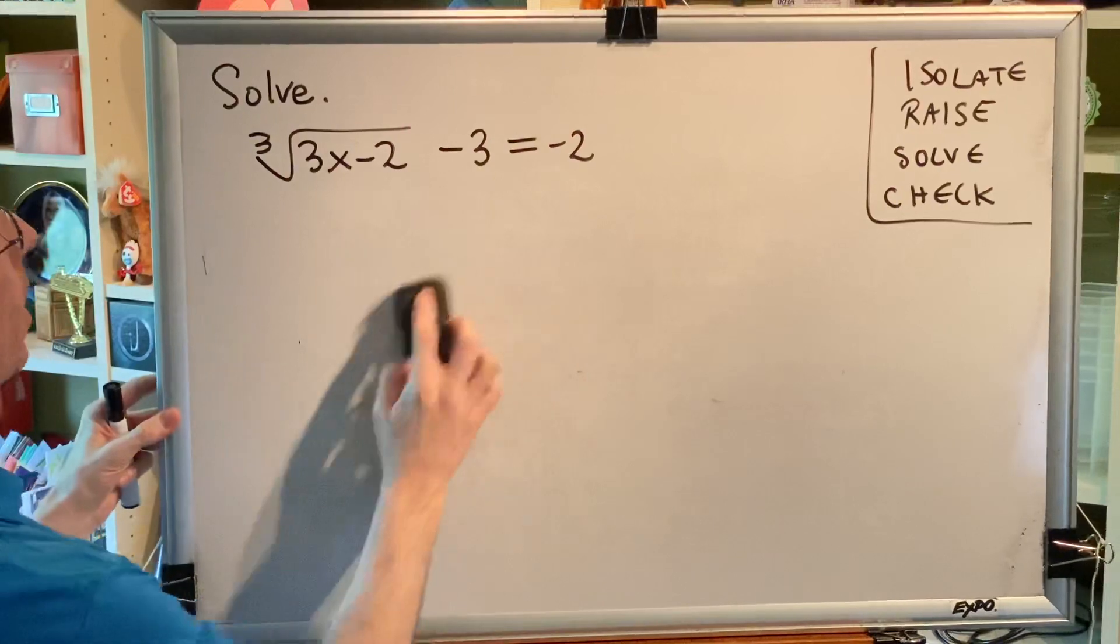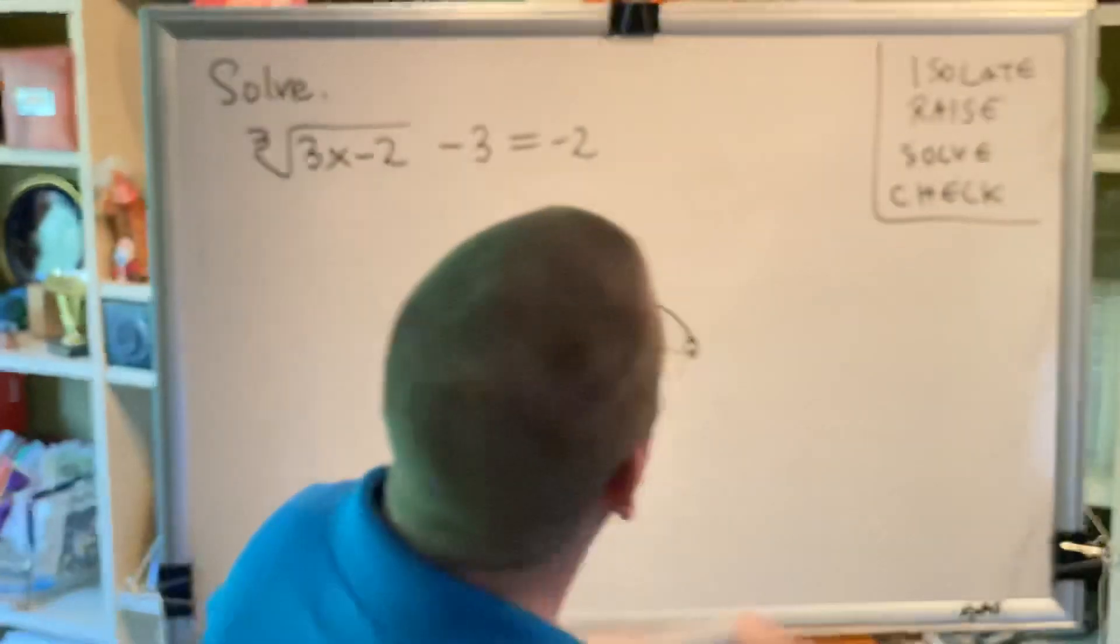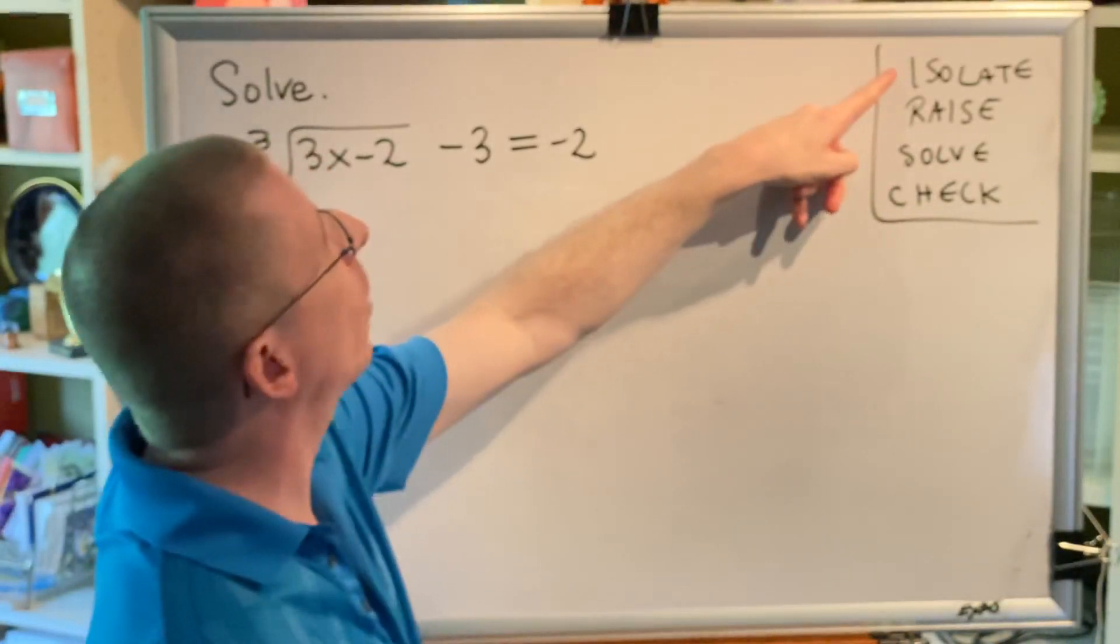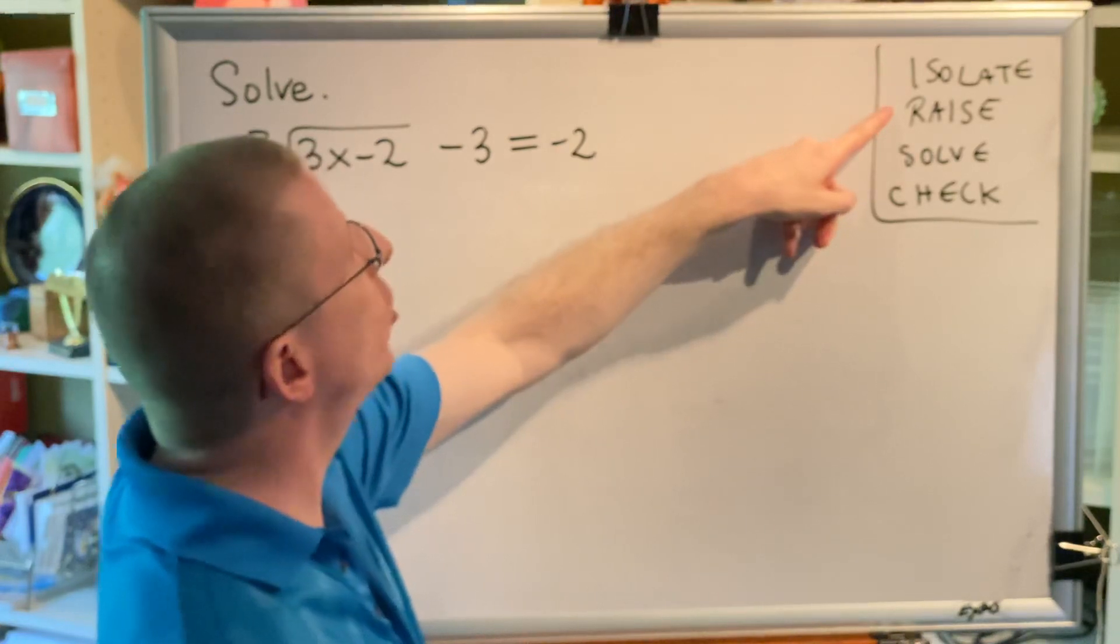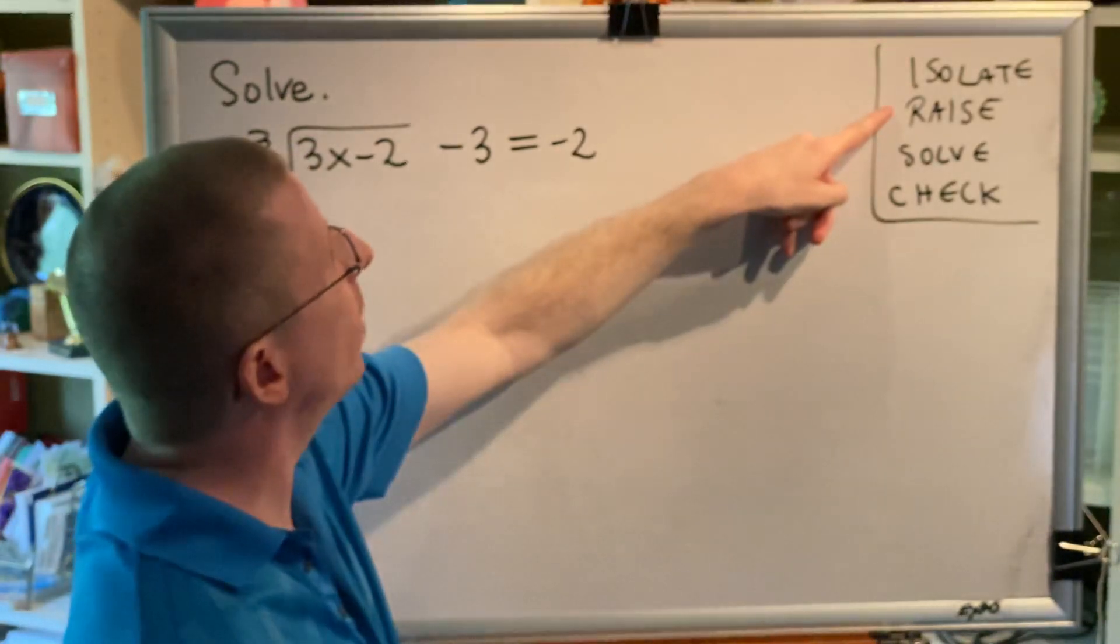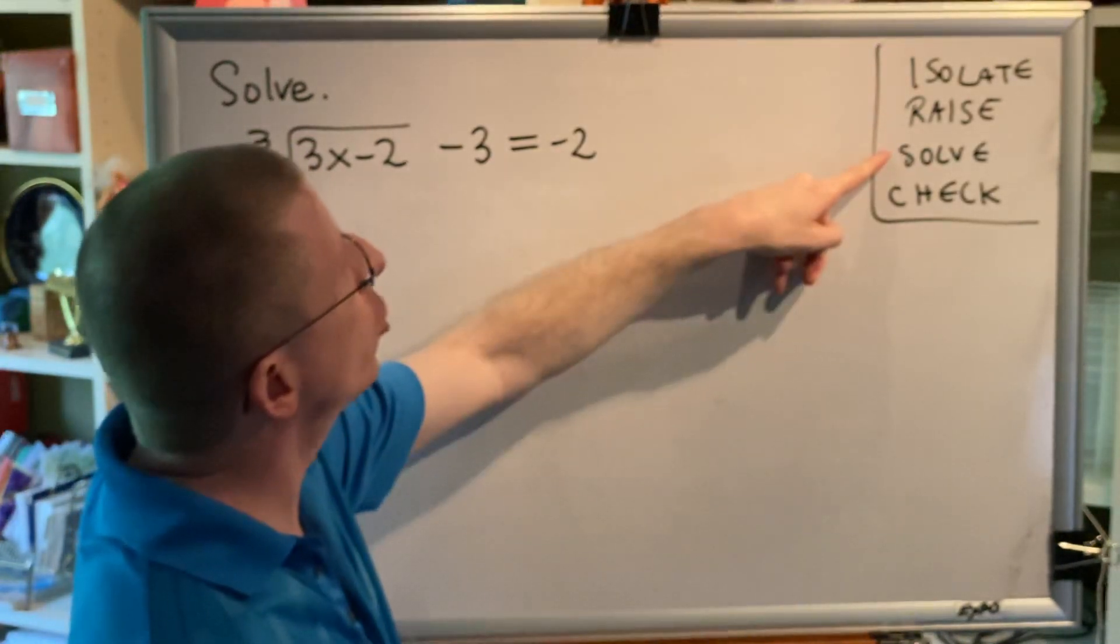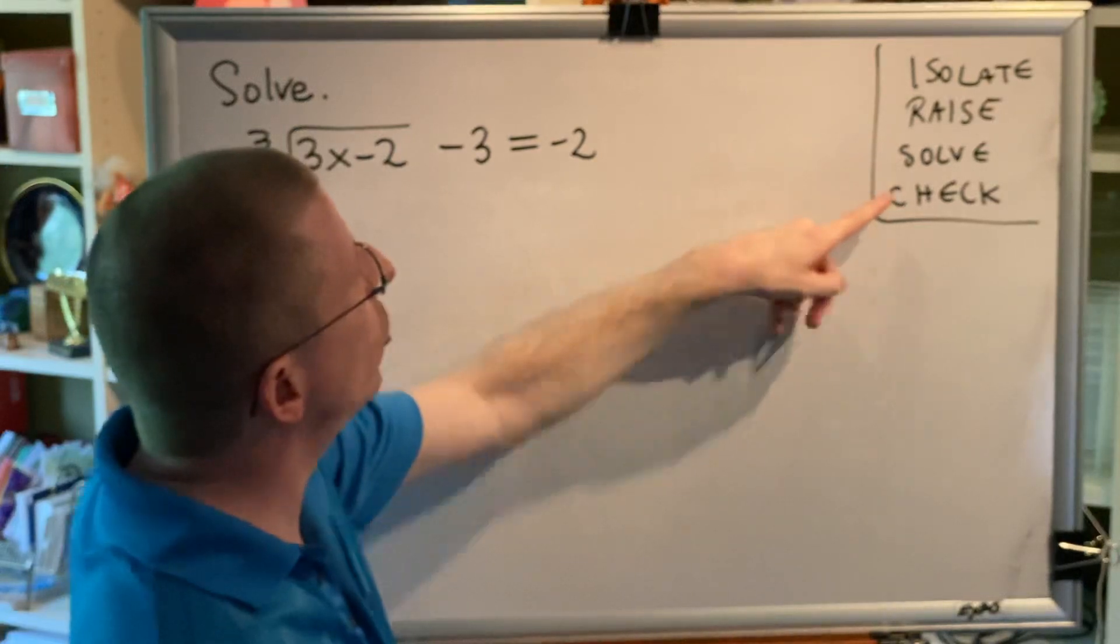The steps for solving a problem of this type are: isolate one of the radicals, raise both sides to a power that matches the index of the isolated radical, solve the equation, and then check the answer.